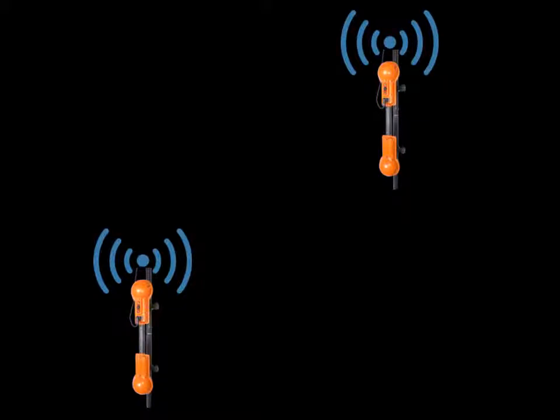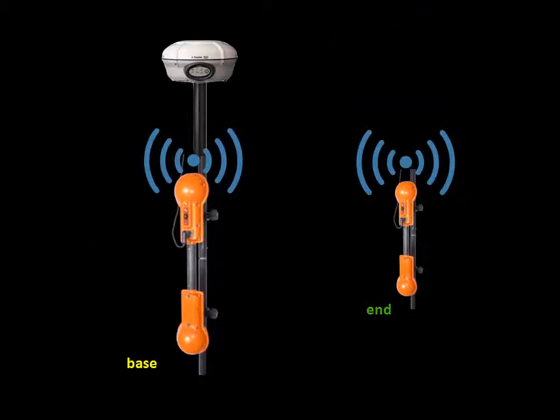Moving baseline mode requires satellite visibility, the presence of the RTK option for the Ashtek boards of both spars, and a base spar with base mode enabled in the firmware. Only spars that have Ashtek boards with the RTK option can use moving baseline mode. Using an R8 rover on the base spar is one way to obtain a geospatial location on a base spar in moving baseline mode.